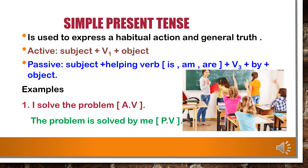For the helping verb, use 'is' for singular nouns (he, she, it), 'am' for 'I', and 'are' for plural (we, you, they). Example: active voice — 'I solve the problem.' In passive voice — 'The problem is solved by me.' 'The problem' was the object in active voice and is now the subject. 'Is' is the helping verb, 'solved' is V3, and 'me' replaces 'I' as the object.